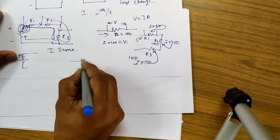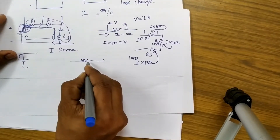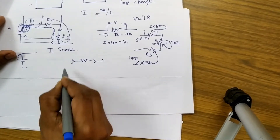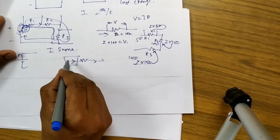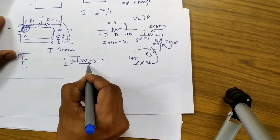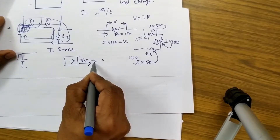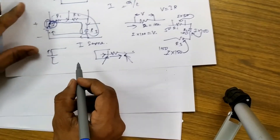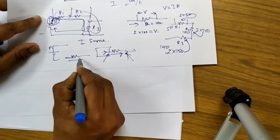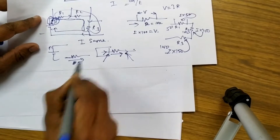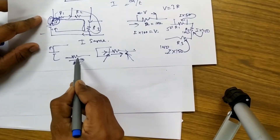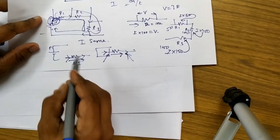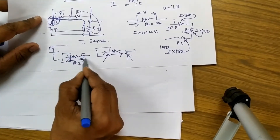We usually say that resistance is used to limit the current, and it does limit the current, but the limiting happens at the battery, not inside the circuit path. In the beginning, before the resistance, the current value is already reduced, so whatever current enters into the resistance, that same current will come out of the resistance. So the current entering and exiting the resistor is the same, and that is why we use a single I arrow marker across the resistor symbol. If there is any reduction in current, it happens at the source, not across the resistor.